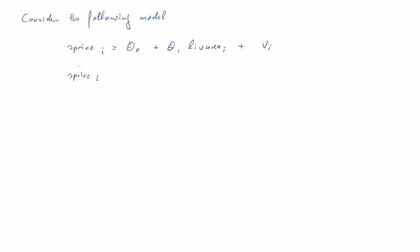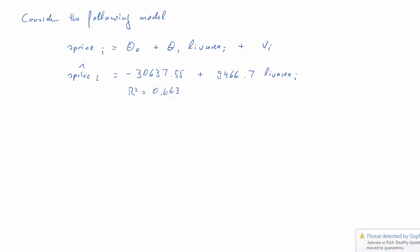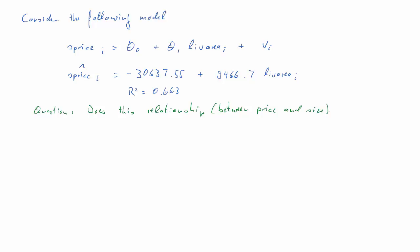Instead, we look at a model using price as the dependent variable and living area as the explanatory variable. We get a negative constant (which doesn't make sense to interpret) and a positive slope coefficient indicating that a larger living area increases price, along with a substantial R-squared. The question we now want to answer is whether this relationship between price and house size differs between houses that have or do not have a swimming pool.